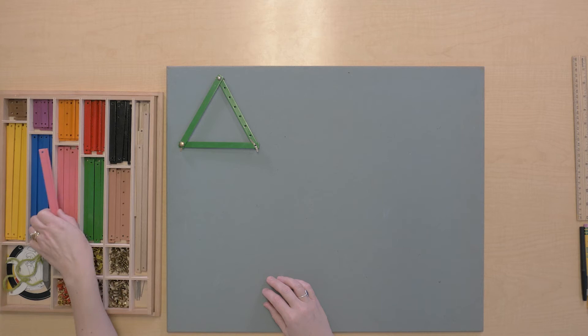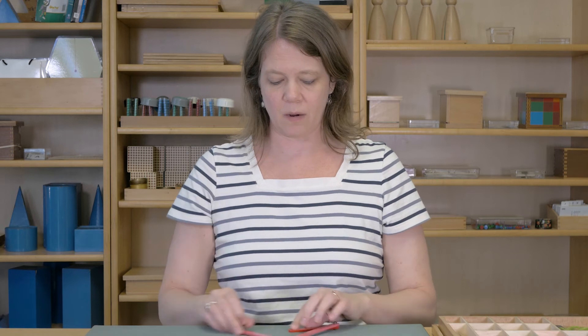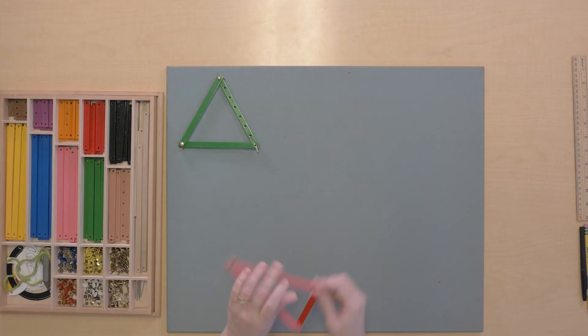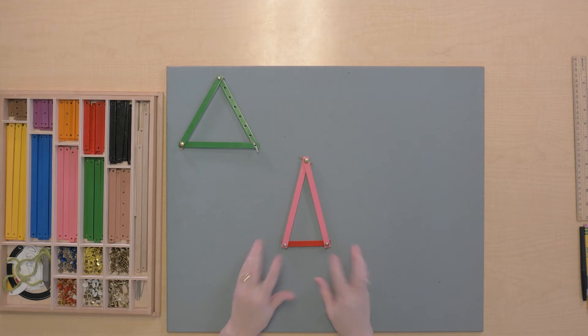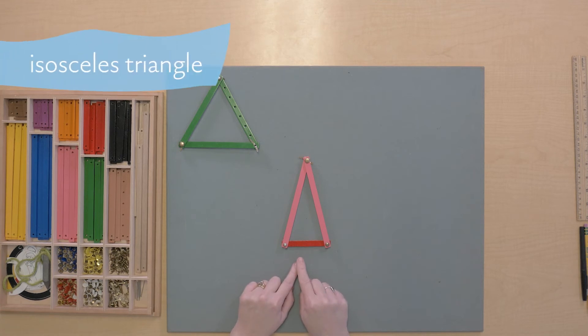But suppose I had a triangle like this. Now on this triangle, I've got two sides that are the same length and one side that is different. And we call this kind of a triangle an isosceles triangle.